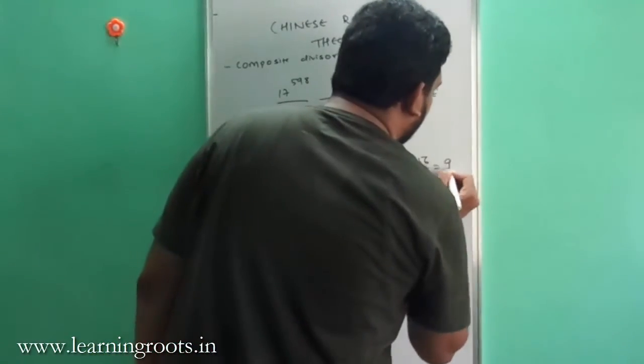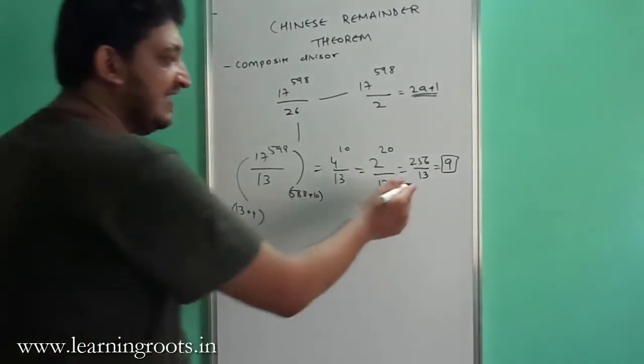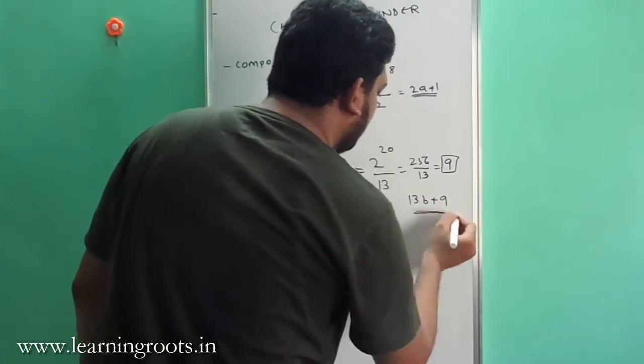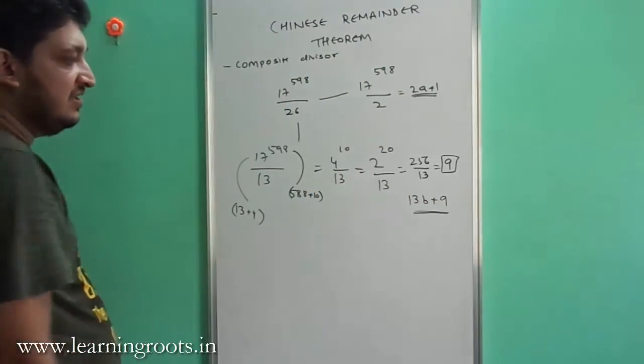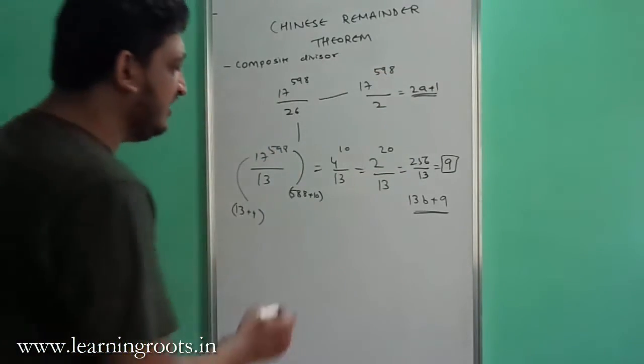So even if you do it the conventional way, you will get the remainder to be 9. Now here the remainder was 1, here the remainder is 9. So this is 13B plus 9. This is the second part of the equation.